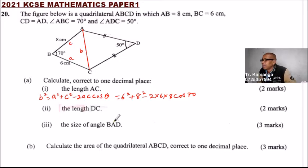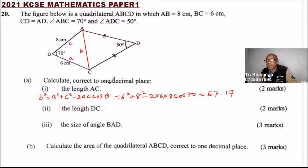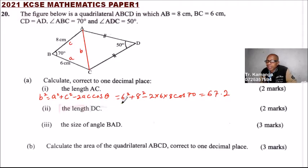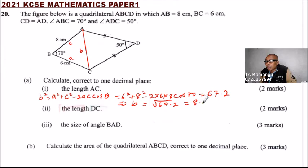Using the calculator, I'm getting 67.16 to two decimal places. We are told one decimal place, so b squared equals 67.2. Taking the square root of 67.16 gives us 8.195, so to one decimal place AC is 8.2 centimetres.